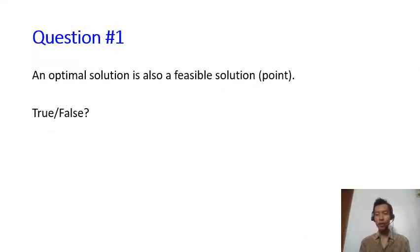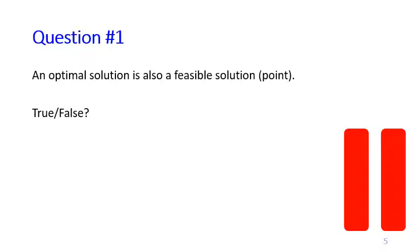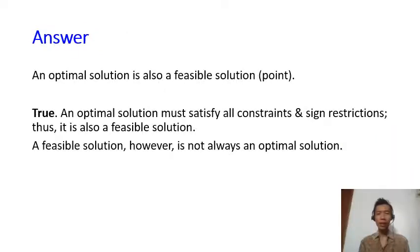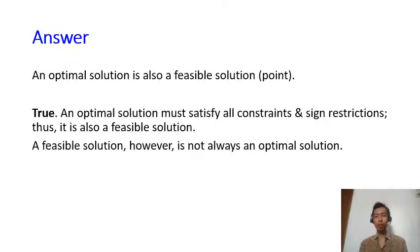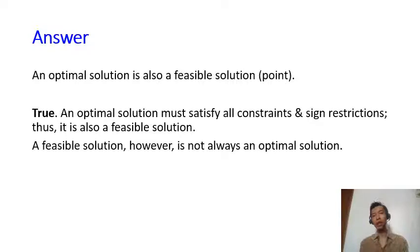Here are some questions to check your understanding about feasible region and optimal solution. First question: an optimal solution is also a feasible solution, or a feasible point — true or false? The answer is true. An optimal solution must satisfy all constraints and sign restrictions; thus, it is also a feasible solution. However, a feasible solution is not always an optimal solution. An optimal solution must be a feasible solution in the first place, but a feasible solution may or may not be an optimal solution.